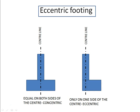In the first sketch, you will see that there is a column and the footing is extending on both sides of the center line of the column. This is a standard or regular footing and can be called a concentric footing. In the next sketch, the footing is extending only on one side of the center line of the column. This can be called an eccentric footing — a footing which extends only on one side of the center line of the column.